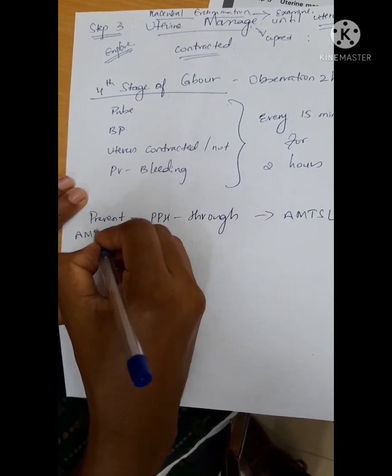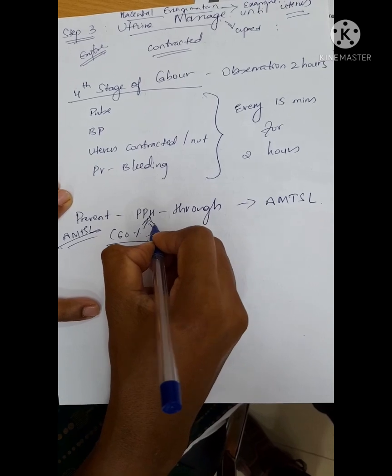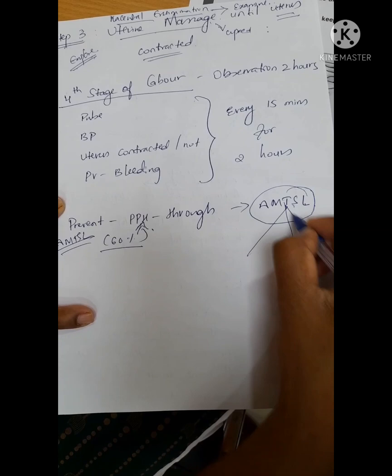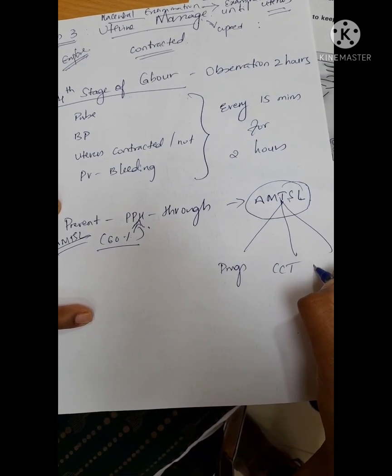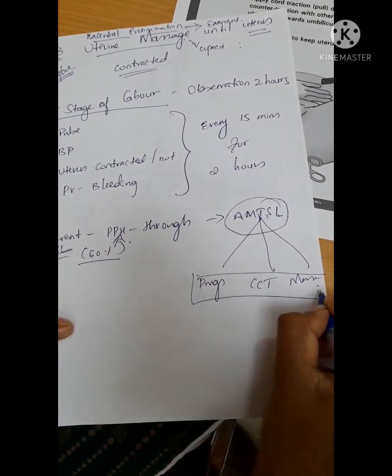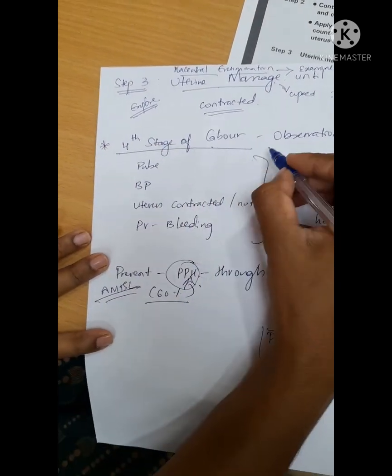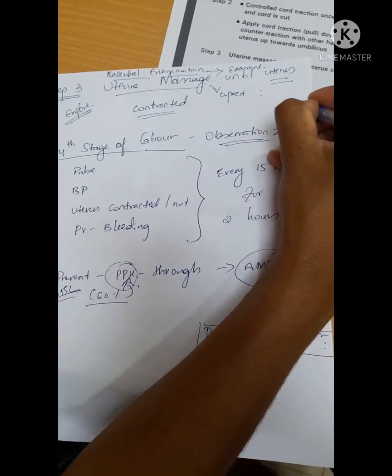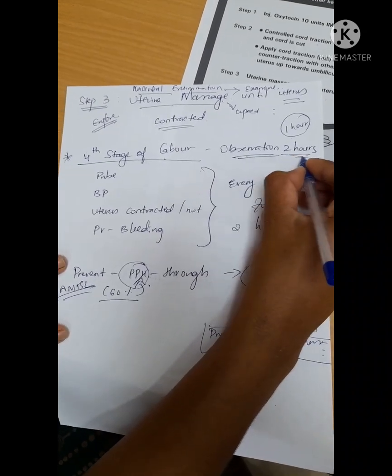Those are all the three steps. If we follow these steps correctly, if we correctly perform AMTSL, we can prevent 60 percent of PPH cases. That's why we give so much importance to correctly performing AMTSL. It's very simple: give uterotonic drugs, apply CCT correctly, and perform uterine massage correctly.